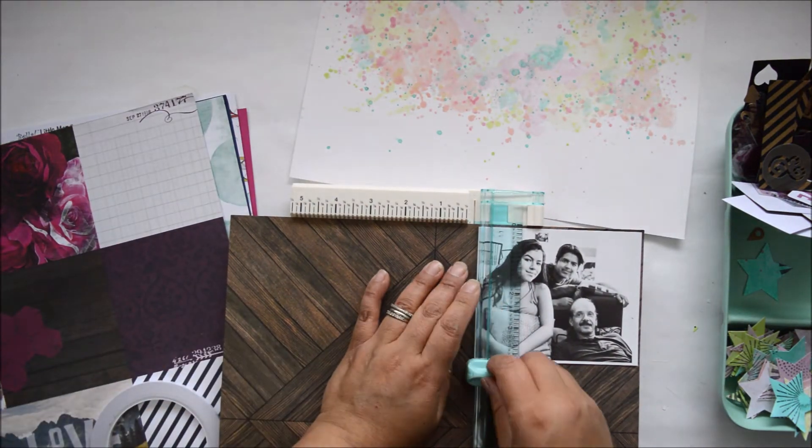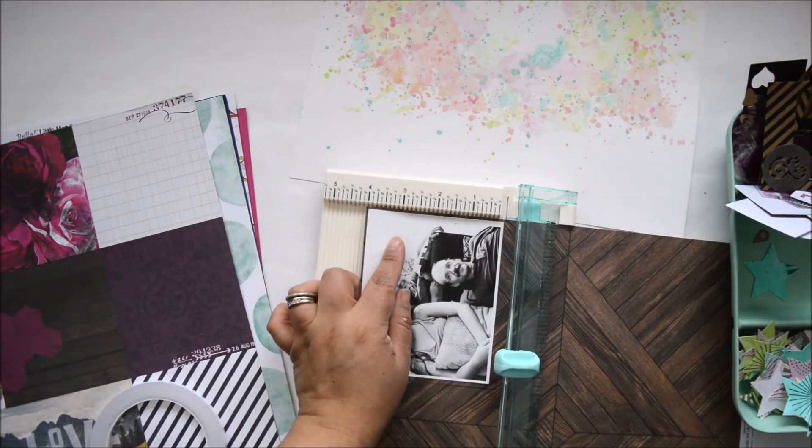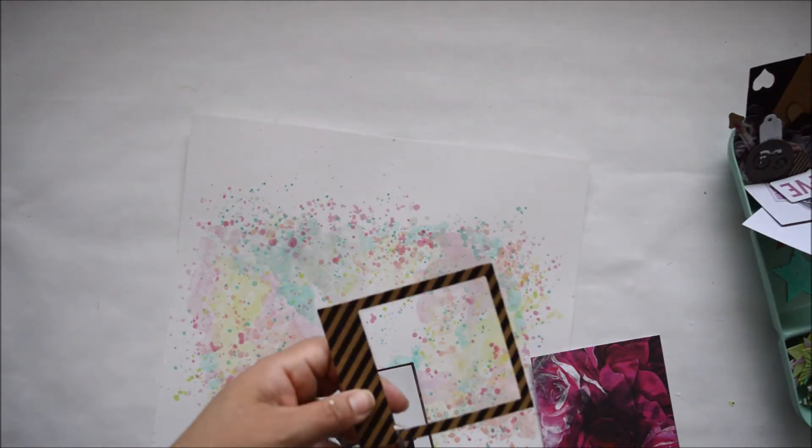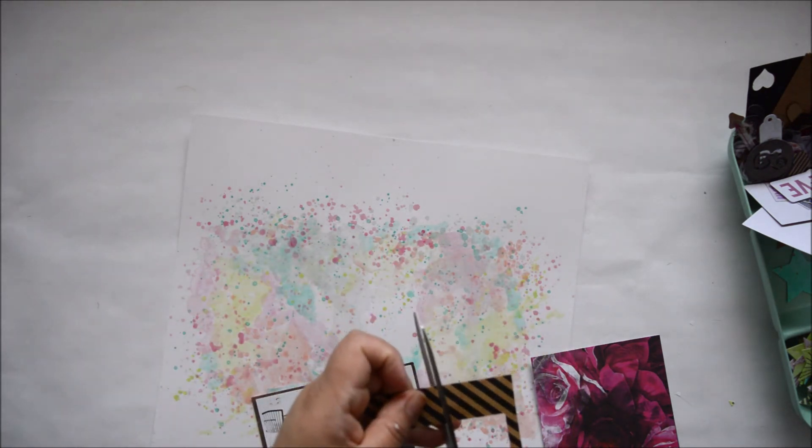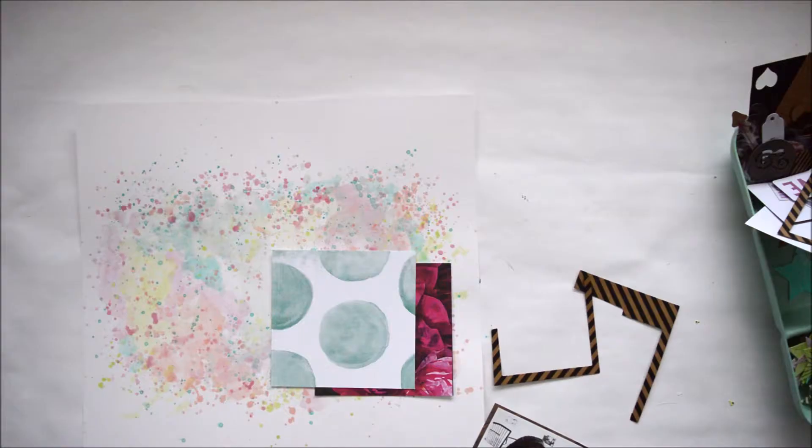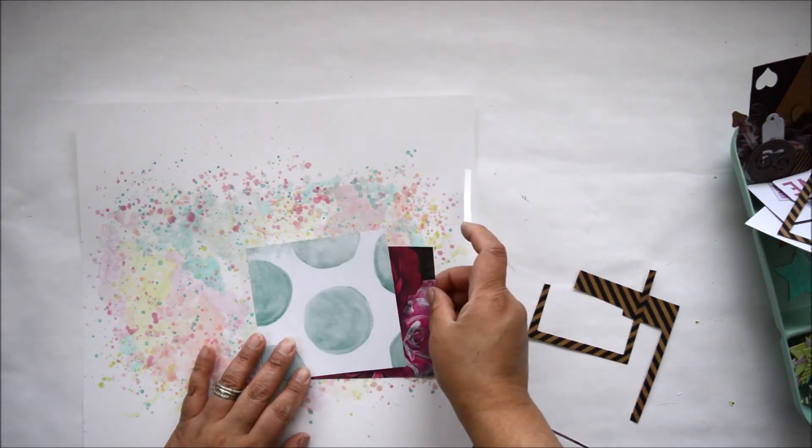Once I had that cut I went ahead and cut the paper right behind it from the Hawthorne collection from Heidi Swapp. And the one right behind it with the teal circles is actually from the Pineapple Crush collection by Heidi Swapp. But the colors match the paint to a tee so I wanted to take advantage of that. So I'm using these two pieces of paper as layers behind the picture.